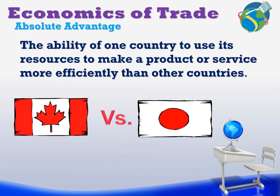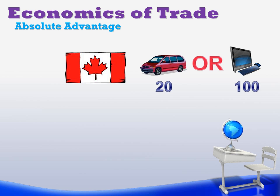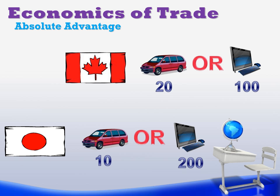Let's keep this very simple. Consider Canada making either automobiles or computers. In a given year, they can make 20 automobiles or 100 computers — that's all they can make. You can add millions onto that, but we'll keep it simple. So 20 automobiles or 100 computers. And let's compare that to our trading partner Japan, who can produce in one given year 10 automobiles or 200 computers.